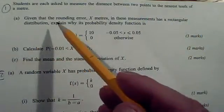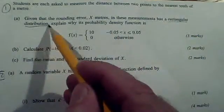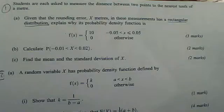In part A, it tells us the rounding error has a rectangular distribution, so we can spot the type of question, the topic we're on.